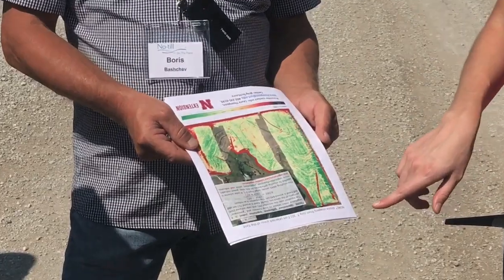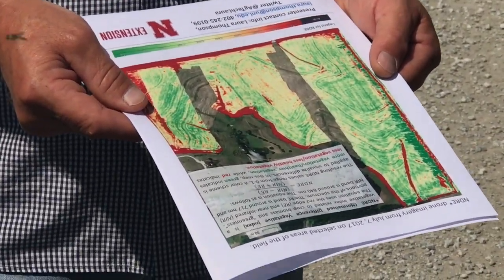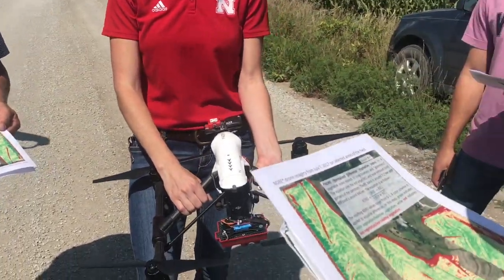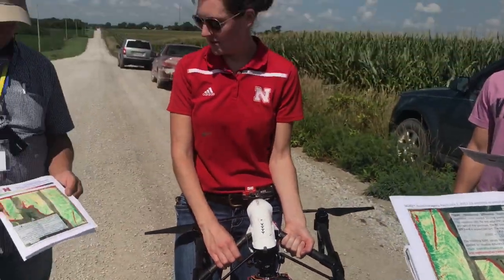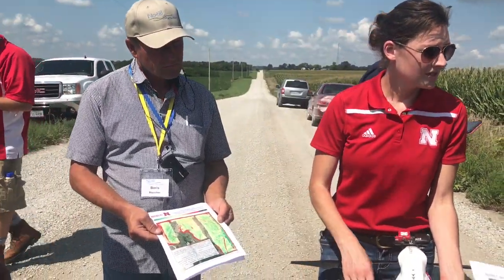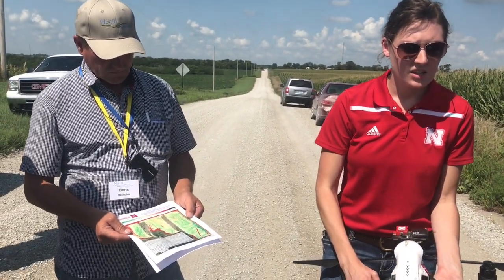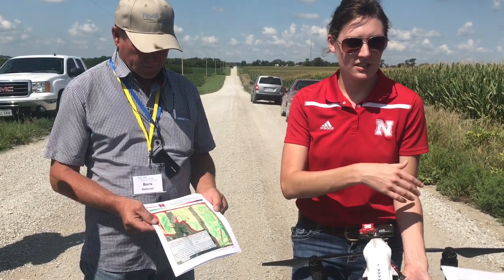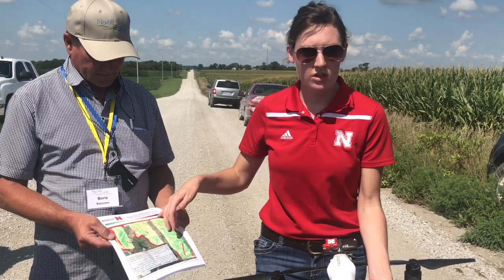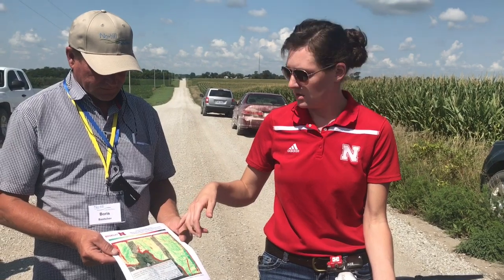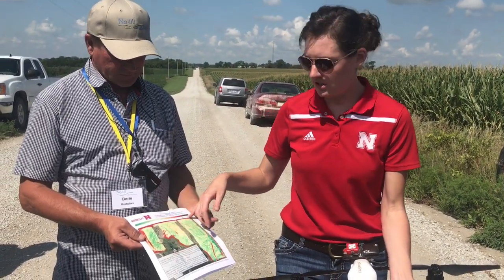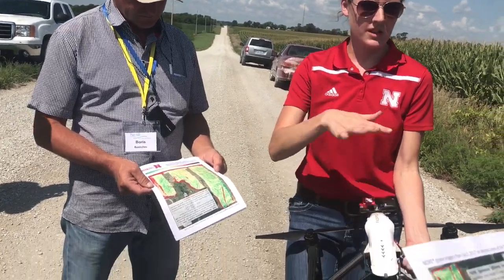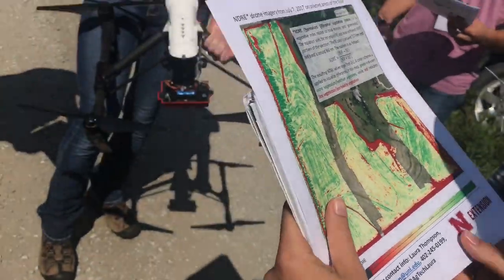On the back, this is the NDRE vegetative index. It's looking at the near-infrared part of the spectrum as well as red. On this map, red means no vegetation or less healthy plants. The road shows up in red here — that's where we're standing — because no plants are growing there. The best parts of the field show up in the darkest green, indicating the thickest and greenest leaves.